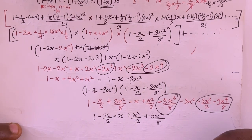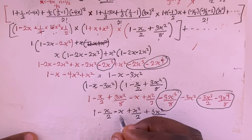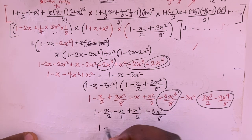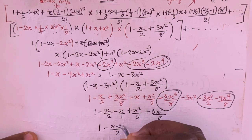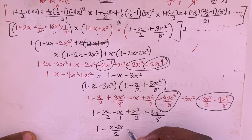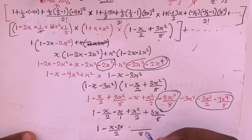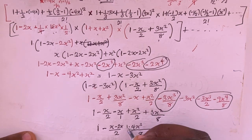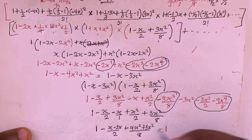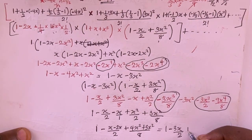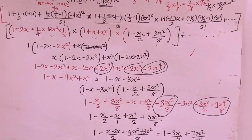Finding the sum: the constant term is 1. For x terms: -x/2 - x = -3x/2. For x² terms: 3x²/8 + x²/2 - 3x² = 3x²/8 + 4x²/8 - 24x²/8 = ... combining gives 7x²/8. So the final result is 1 - 3x/2 + 7x²/8.